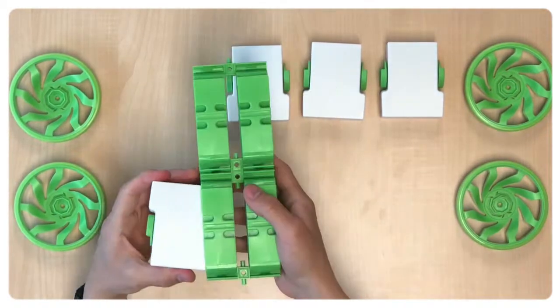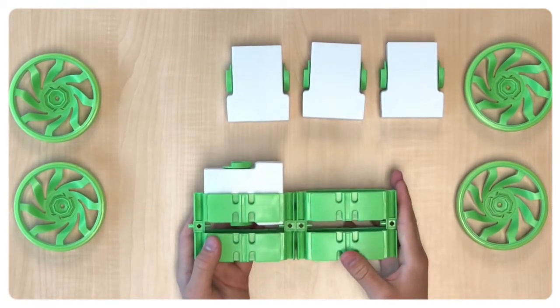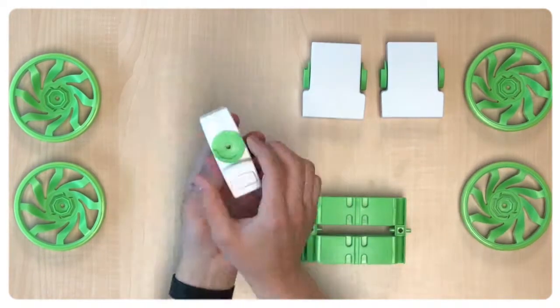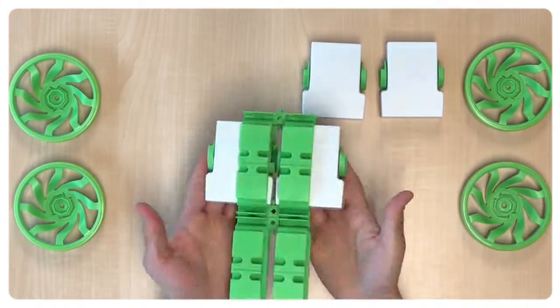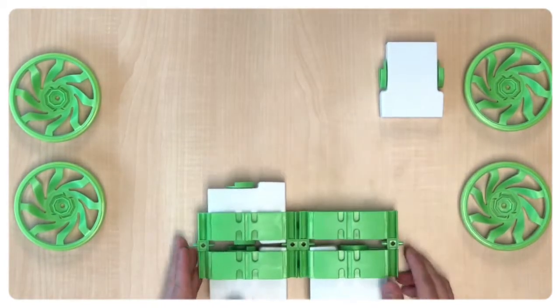Now what we want to do is place the module with the motorized side facing the outside of the robot. And then we repeat the same task for all four modules. Make sure to have the correct orientation of the modules just like you see here in this video.